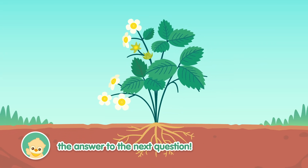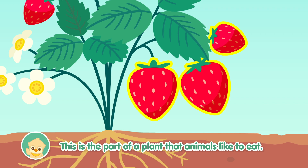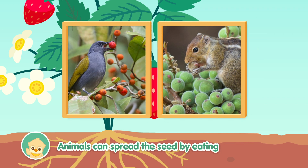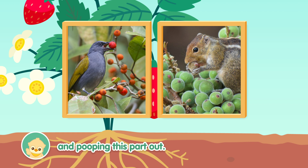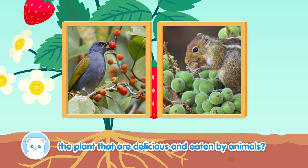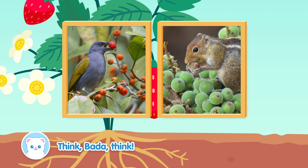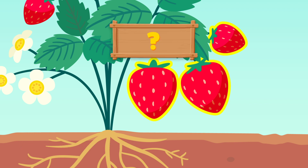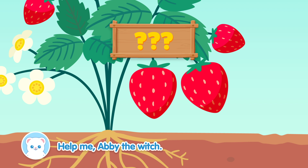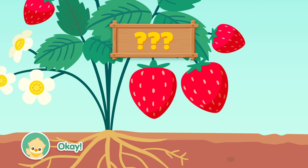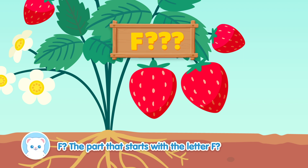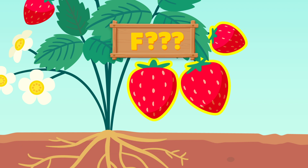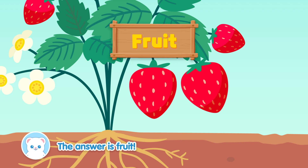But I bet you don't know the answer to the next question! This is the part of the plant that animals like to eat. Animals can spread the seed by eating and pooping this part out. What do we call the part of the plant that are delicious and eaten by animals? Think, Bada! Help me, Abby the Witch! I want to get out of this bubble! Please! Okay, I will give you a hint. This part starts with the letter F. The part that starts with the letter F? I know! Fruit! The answer is fruit! Great job!